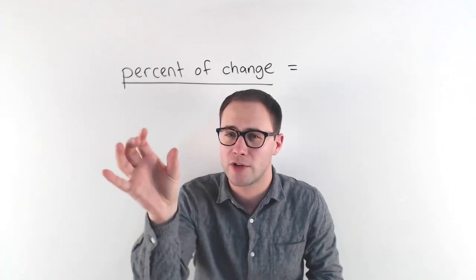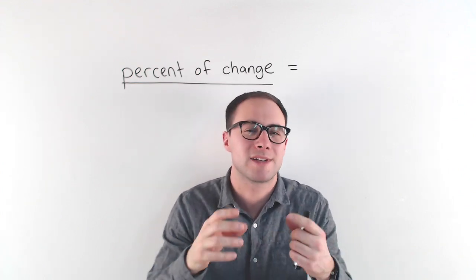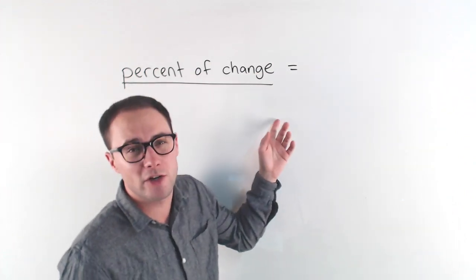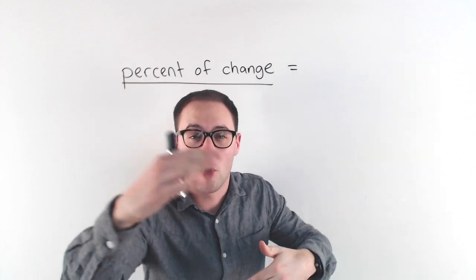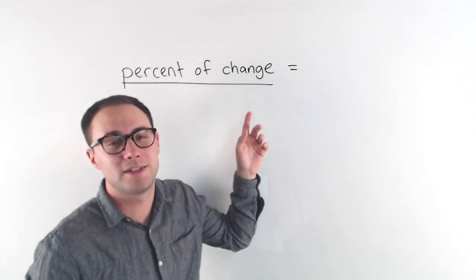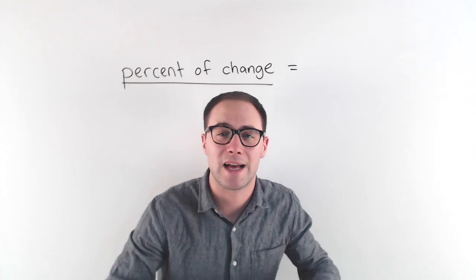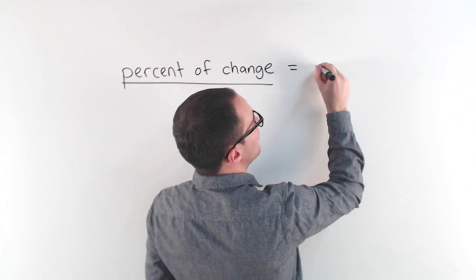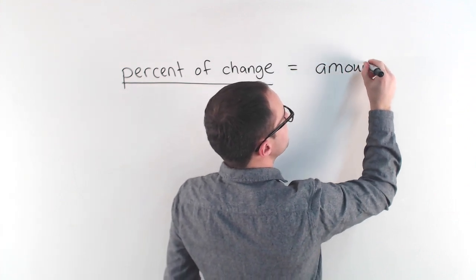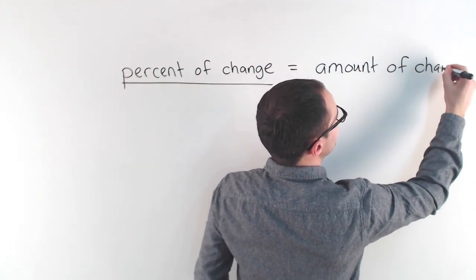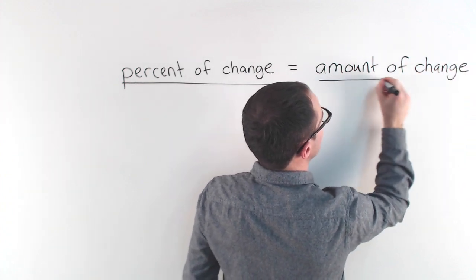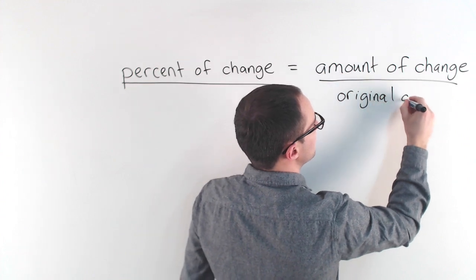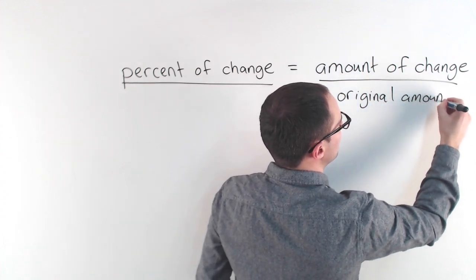All we're doing is changing it from the amount of increase or decrease to a percent that it increases or decreases. Sometimes this will be a percent of increase if the new amount is more than the original, and sometimes a percent of decrease if the amount is less than the original. Percent of change is just the amount of change divided by the original amount.